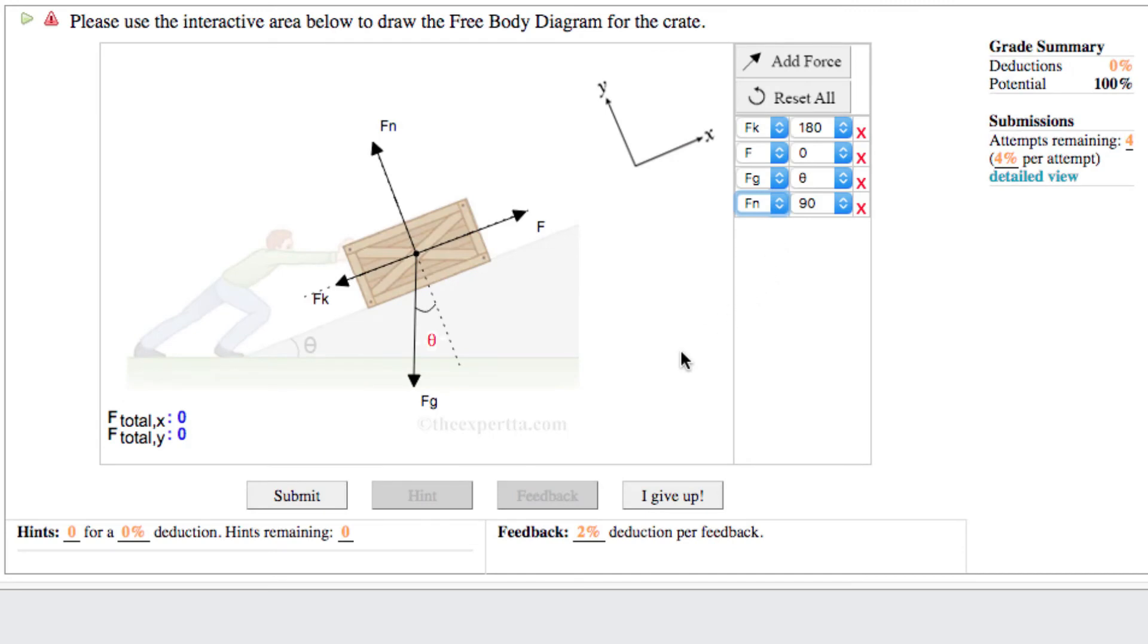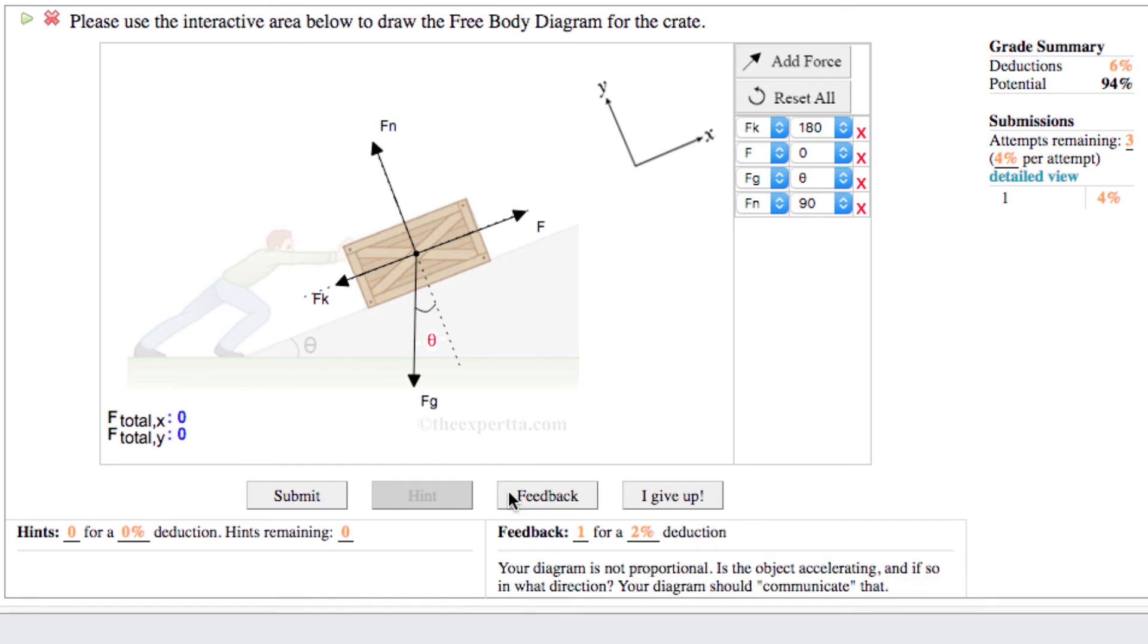The display indicates equilibrium by showing zero for the sum of forces in a given direction. Feedback is provided for misconceptions related to proportionality of the diagrams.